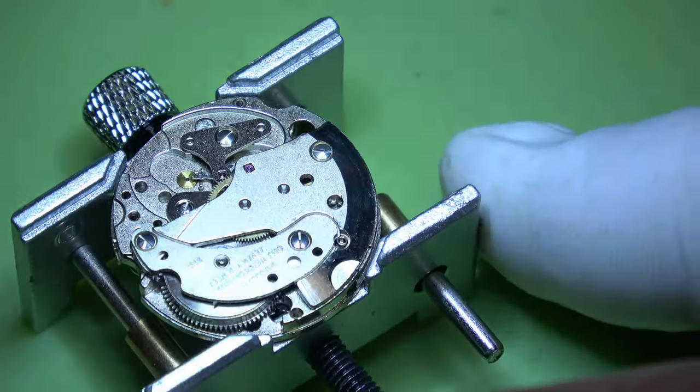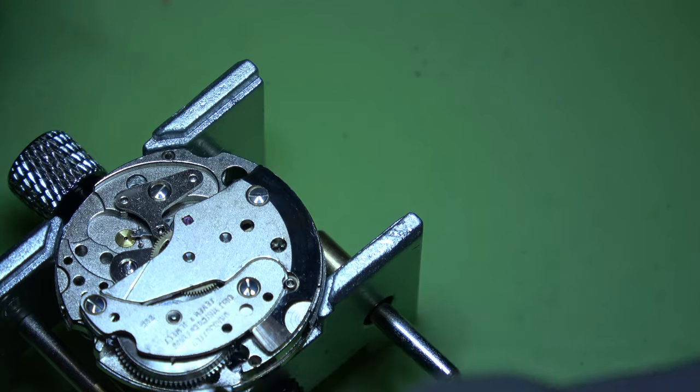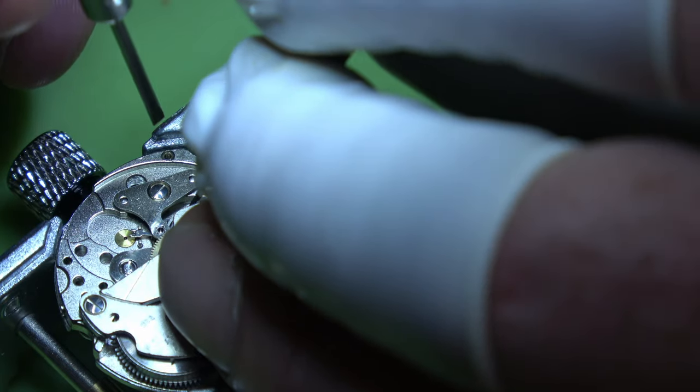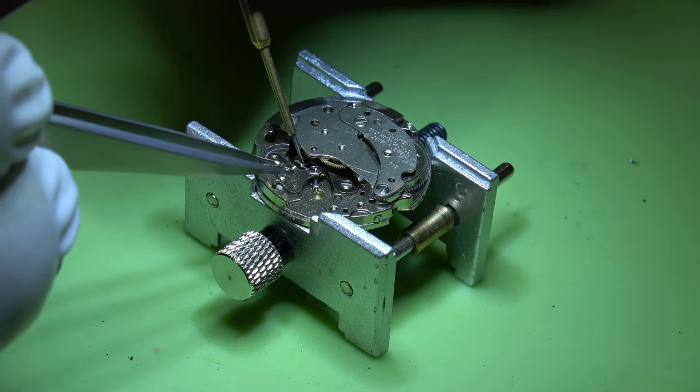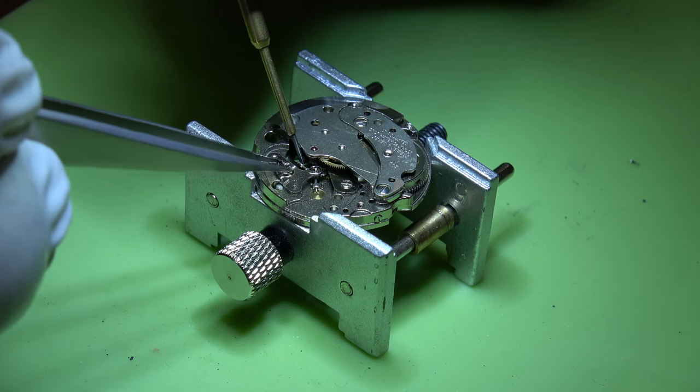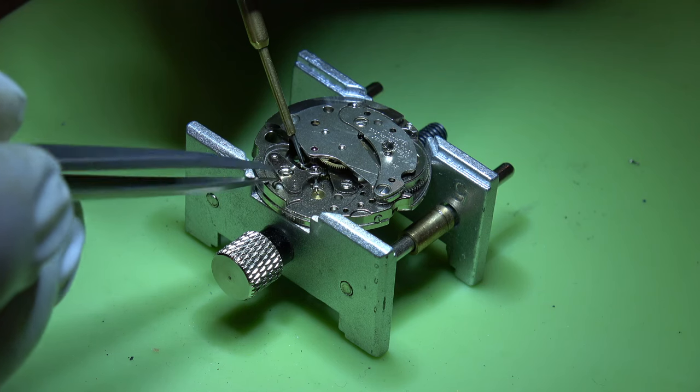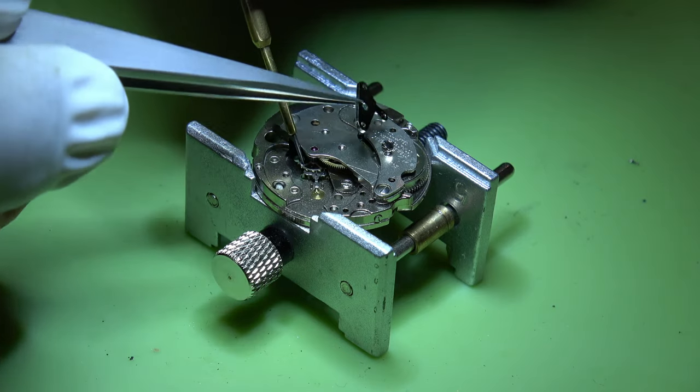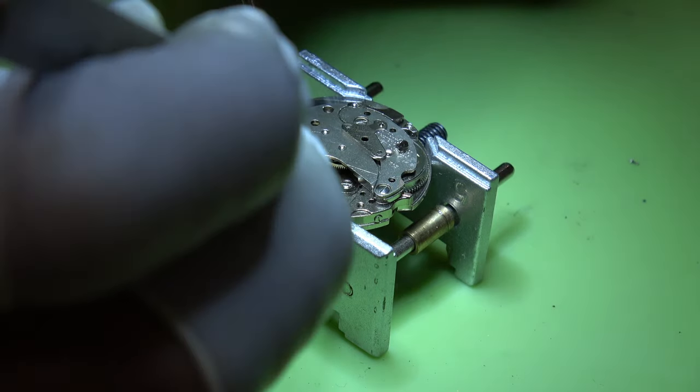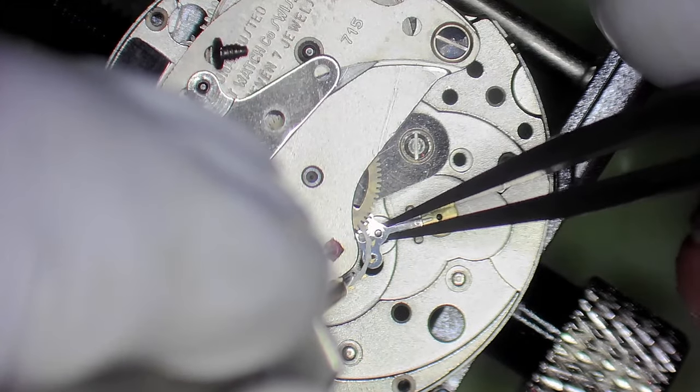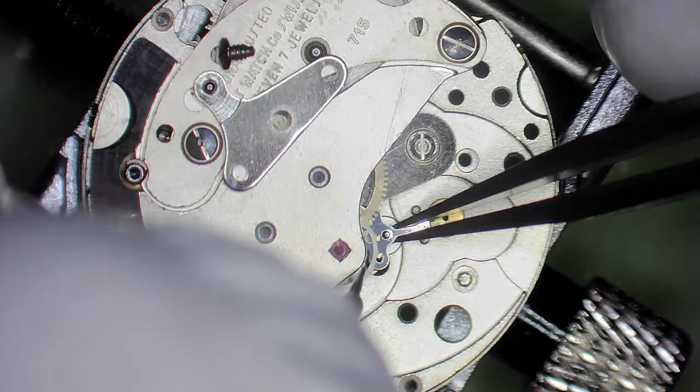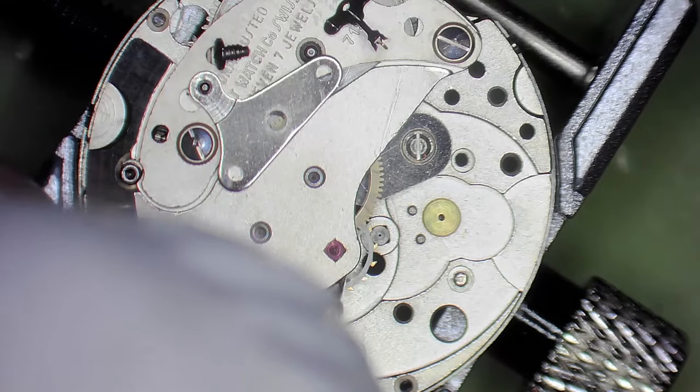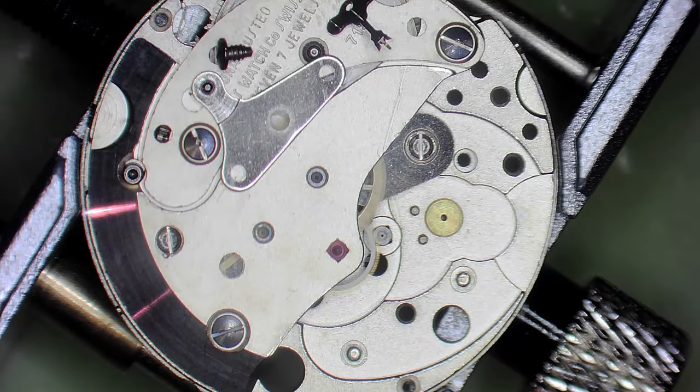Now one thing I did notice is this one doesn't have a clutch—it's a winding pinion but no clutch. Because there isn't a screw on top of the mainspring barrel, I can't take the power out with the click spring the normal way. So what we're going to do is remove the pallet fork and then let the power unwind.